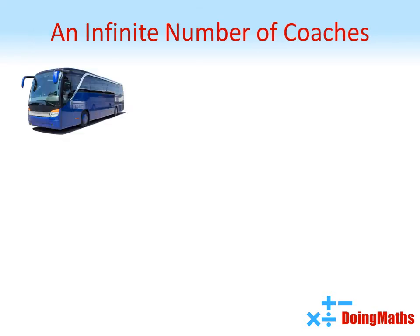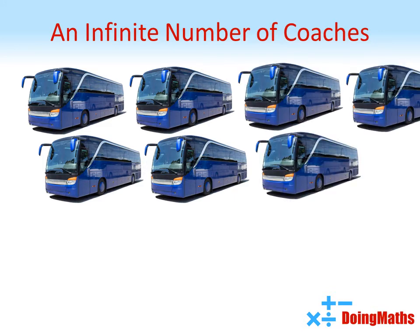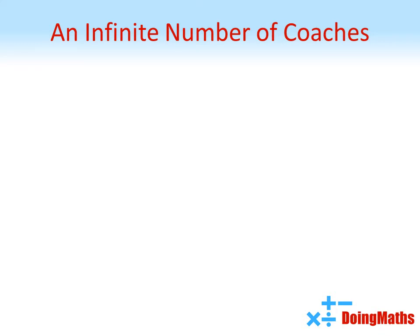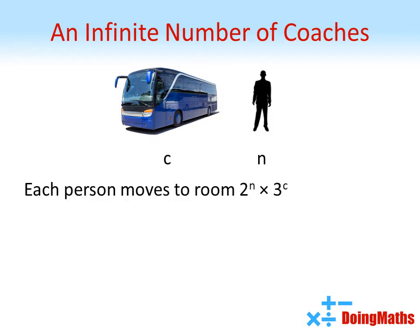The next day, an infinite number of coaches appear, each containing an infinite number of new guests. The manager gives each coach a number, denoted as C, and lets C equals 0 represent guests already in the hotel. Each person on the coach has a seat number, denoted as N. Each person is now placed in the room given by the expression 2 to the power of N multiplied by 3 to the power of C.